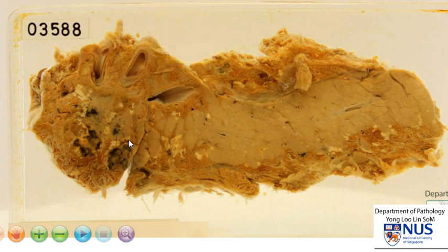These findings are indicative of acute hemorrhagic pancreatitis. Usually, in addition to this hemorrhage and fat necrosis with saponification, we can also see edema and necrosis of the pancreatic parenchyma, which is not so obvious in this particular specimen.